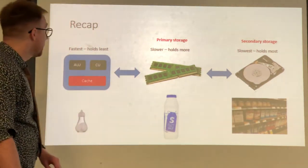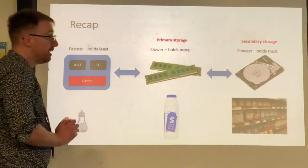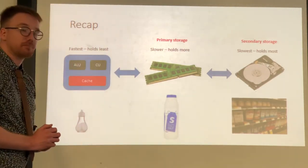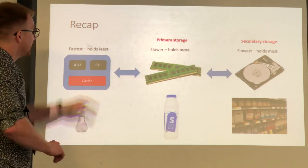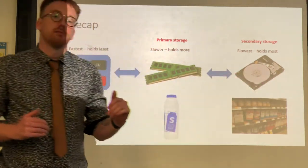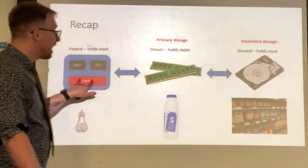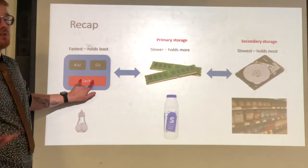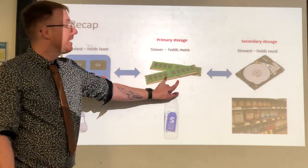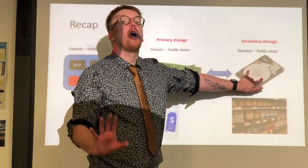In terms of speed of access, accessing anything inside the CPU is really fast. RAM is next, and then hard drive secondary storage is slower. But the key difference is that as we go from faster to slower storage, the capacity — the amount of data that storage medium can hold — increases substantially. Cache inside the CPU can hold a few megabytes. Main memory, RAM, a few gigabytes. And secondary storage, in particular a hard drive, hundreds of gigabytes.